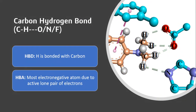Carbon-hydrogen bond: in this type of bond, hydrogen is bound with carbon, making it a hydrogen bond donor. The hydrogen bond acceptor is the most electronegative atom due to its active lone pair of electrons. On the right side, the hydrogen bond donor is attached to carbon and this hydrogen makes an interaction with oxygen, which is the most electronegative atom. Another example shows this interaction occurring with nitrogen.